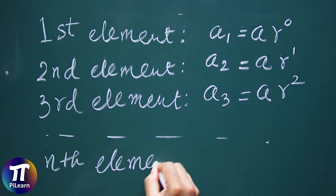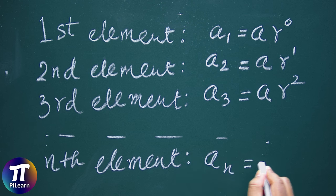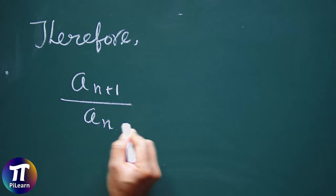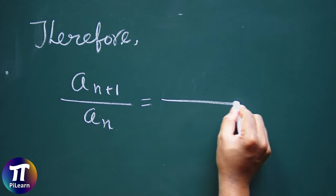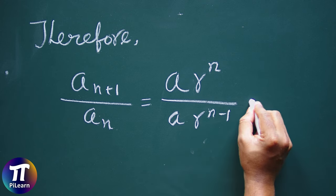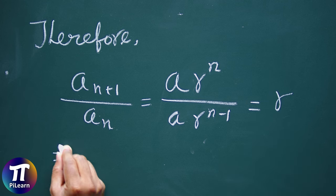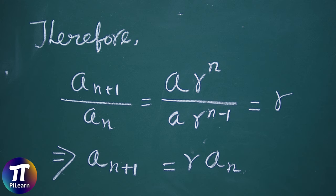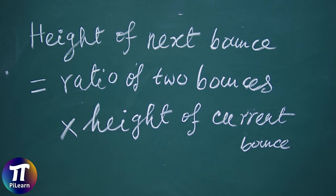So the nth element must be a·r to the power n minus 1. Therefore, a·r^n divided by a·r^(n−1) equals r, which implies a_(n+1) = r·a_n. This simple recurrence relation may come in handy in many problems. For example, we can say that the height of the next bounce equals the ratio of two consecutive bounces times the height of the current bounce.